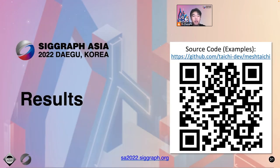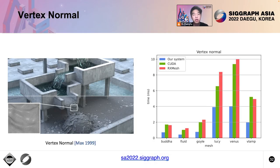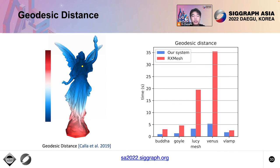Let's see our results. Our experiments are all reproducible through the provided repository. Vertex normal computation is a simple but typical mesh-based operation. We picked several high-resolution surface models with millions to tens of millions of surface triangles. We compared our system against RxMesh as well as an optimized hand-written CUDA implementation. Our system outperforms both the optimized CUDA implementation and RxMesh. The geodesic distance application computes the shortest distance between a selected vertex and all other vertices on a surface. Our system has a significant speedup compared with RxMesh.